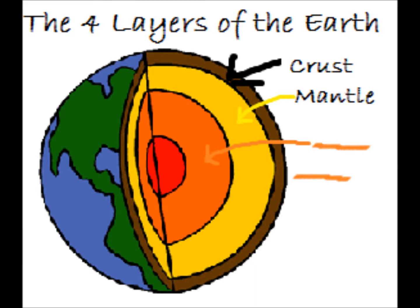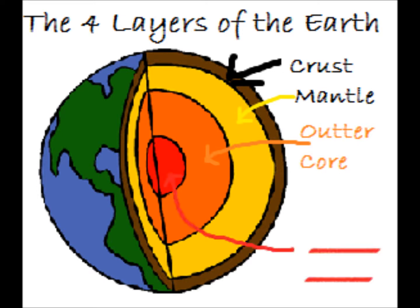Next is the outer core, where it is hotter and there is more pressure. Under that is the inner core, where it is so high in pressure it is actually compacted into a solid. Unlike the mantle and crust, both cores are made mostly of nickel and iron, where the mantle and crust are made of mostly rock material.